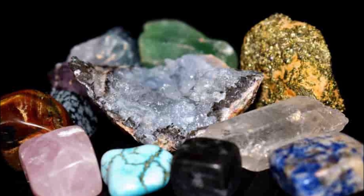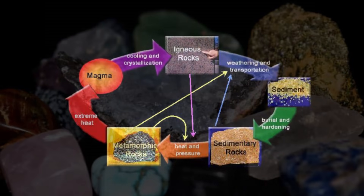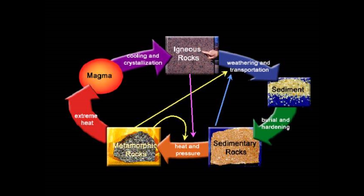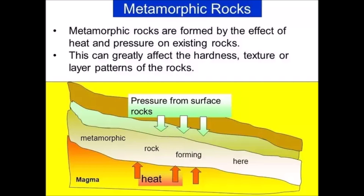What are metamorphic rocks? Metamorphic rocks start out as some other type of rock, but have been substantially changed from their original igneous, sedimentary, or earlier metamorphic form. Metamorphic rocks form when rocks are subjected to high heat, high pressure, hot mineral-rich fluids, or more commonly, some combination of these factors. Conditions like these are found deep within the earth, or where tectonic plates meet.